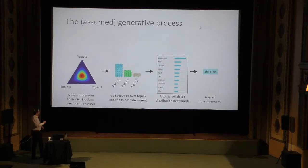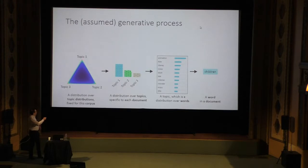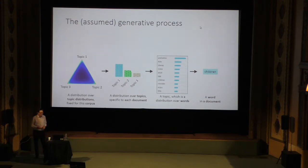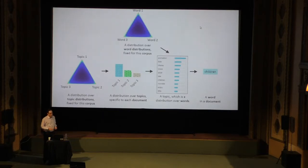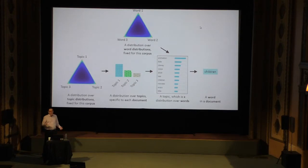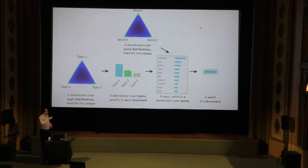Here we have a distribution weighted towards an even mixture of all three topics, but it doesn't have to be that way. It can look with red points at the edges, giving you topic mixes that only use a few of the topics. Of course we have more than three topics — in this case we actually have 40. Also, the topics themselves come from a Dirichlet distribution, so we have a distribution over word distributions. This particular collection of words is one sampling from that overlying distribution.